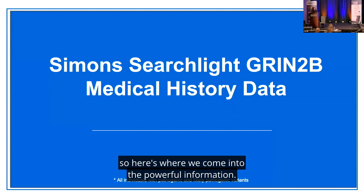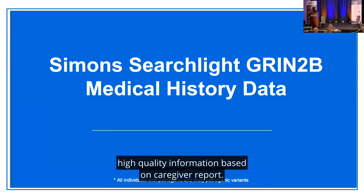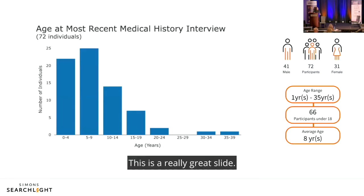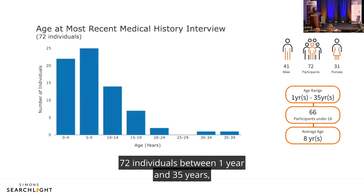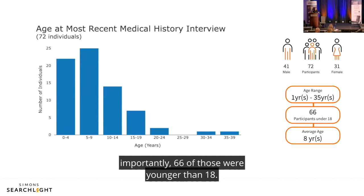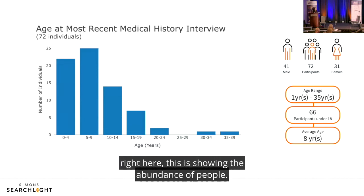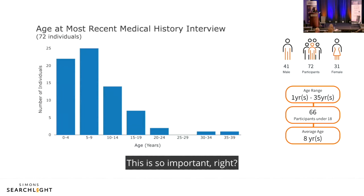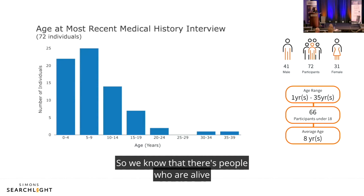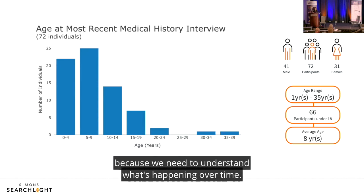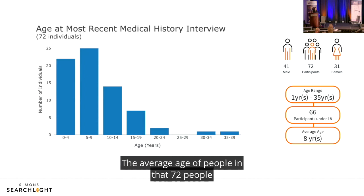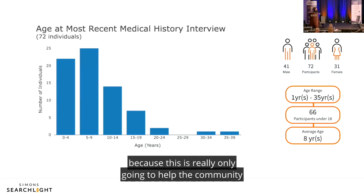In terms of medical data, we aim to collect high-quality caregiver-reported information. Looking at 72 individuals aged 1 to 35 years, with 66 younger than 18, the age distribution shows more younger participants and fewer older ones. The average age is 8 years old. This is just a cross-sectional snapshot — the goal is to follow everyone longitudinally over time to understand what happens as people get older.